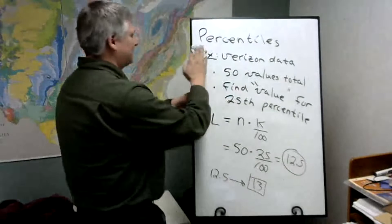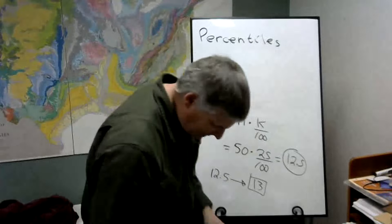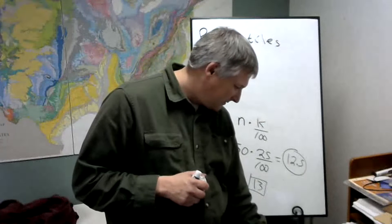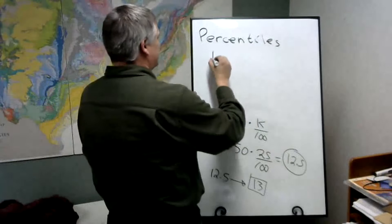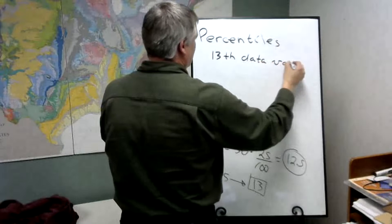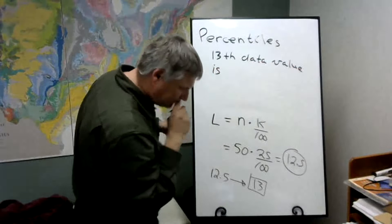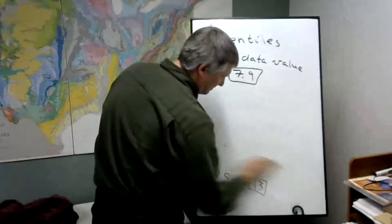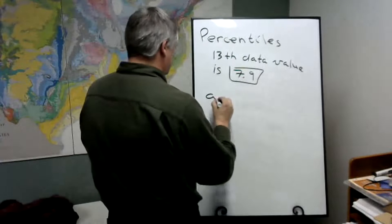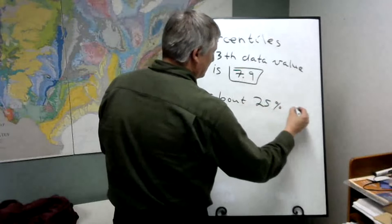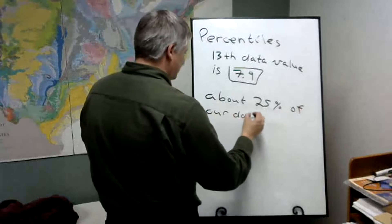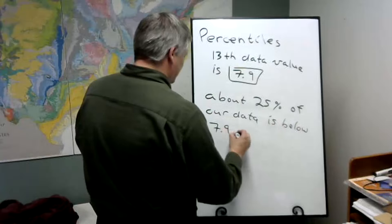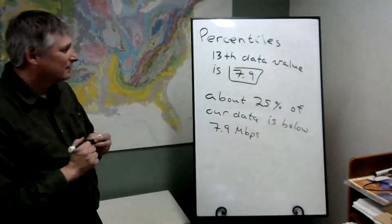So what data value is this? Well, in the data, let's take a look at the 13th. So if you take a look at 13, 10, 11, 12, 13. So the 13th in the chart, it's 7.9. So what this says is this: about 25% of our data, and again this is data that's been put in numerical order, is below 7.9. So that's what we've got.